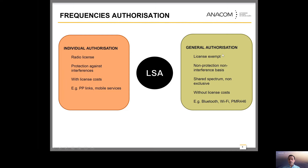We also have spectrum sharing today with the general authorization — what we call short range devices. These operate on a non-protection, non-interference basis. They don't have costs, but they can suffer interference. Examples include Wi-Fi and Bluetooth. The main difference is that with individual authorization you can plan the network and have guaranteed quality of service — QoS. With general authorization, QoS is not guaranteed.